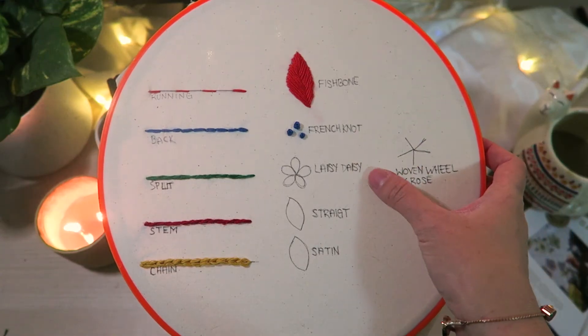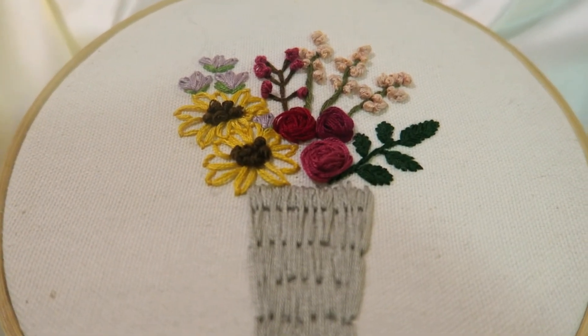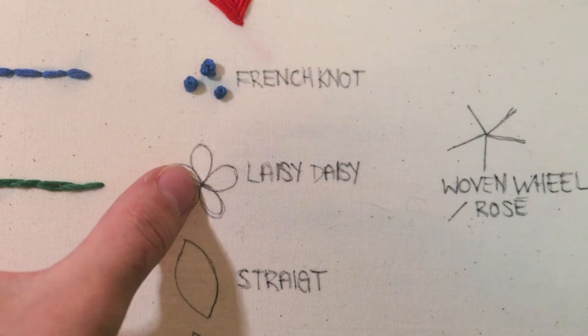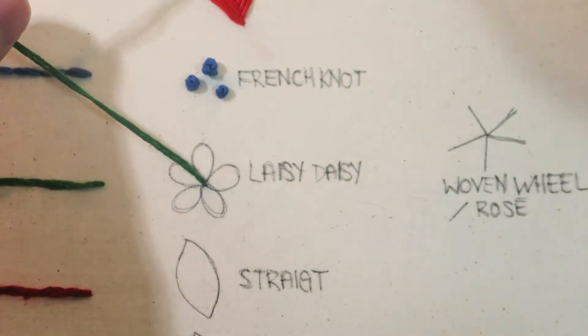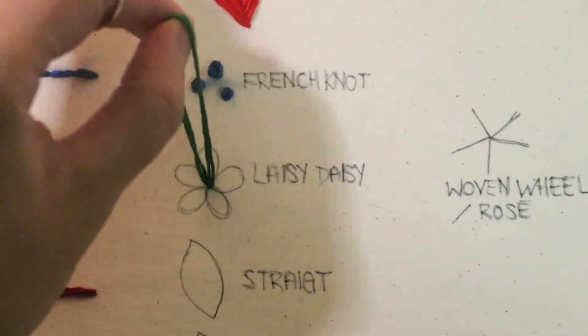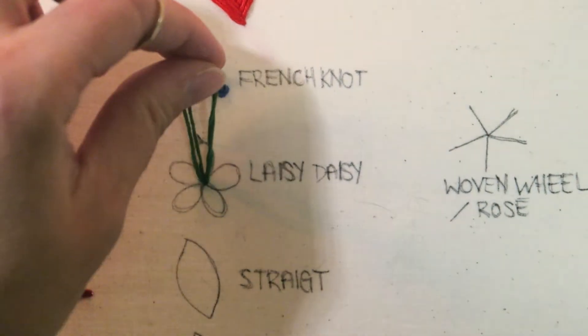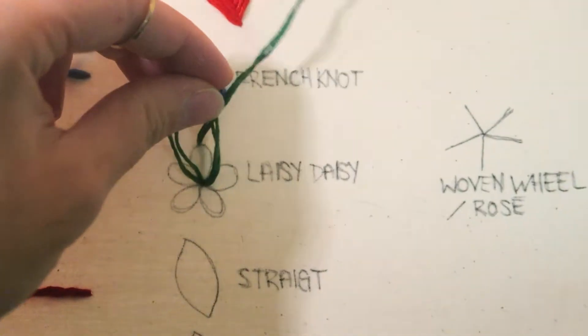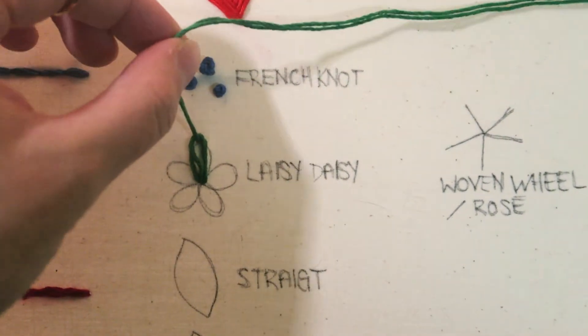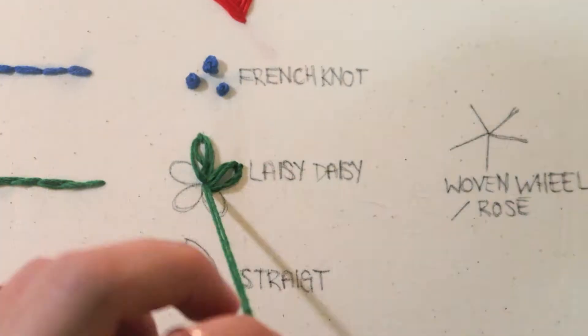The next stitch is the lazy daisy. I cringe when I see the way I wrote lazy. It looked right at the time and clearly my brain was somewhere else. This stitch is often used when creating flowers. Starting from the back of the hoop, pull the needle and thread all the way through the front. You're going to create a loop and then push your needle from the front of the hoop to the back going through the same hole you just created. You don't want to pull your thread all the way through because you want to keep that loop. Then you're going to go to the top of the loop and push the needle through to the front again. We're going to secure this little loop in place by pushing your needle through to the back. Repeat this process until you have finished your flower.